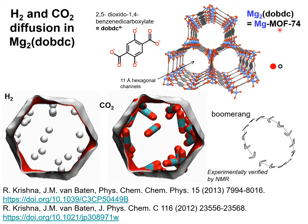Magnesium MOF74 has one-dimensional channels that are hexagonal in shape and have a size of 11 angstroms. The unsaturated magnesium atoms are exposed and can bind with gas molecules such as CO2, with alkenes and alkynes. Magnesium MOF74 has potential applications for carbon capture and for alkene-alkane separations and alkyne-alkene hydrogen separations.